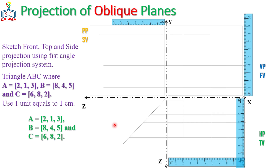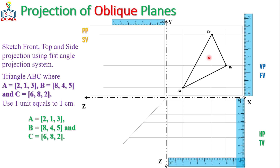The projections of points A, B, and C on the front view use the X and Y coordinate system. Point A is 2 cm in X and 1 cm in Y, so AF is placed at that location. Point B is 8 in X and 4 in Y, placed at its specific location. Point C is 6 in X and 8 in Y, placed at that position. Once all points are located, connecting them gives the projection of triangle ABC on the front view.